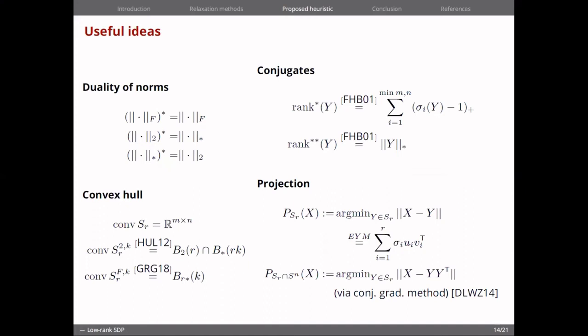And let me highlight these conjugate relations in which the one I want to be focusing on is on the bidual of the indicator function, which turns out to be the nuclear one-norm function. This is going to be important because remember that we want to convexify our problem, and the bidual is going to be the best convex approximation to this rank function.